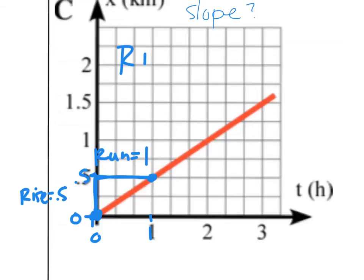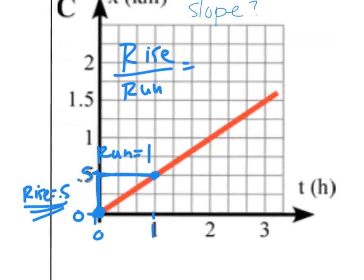All right, so if I go to calculate rise over run, rise divided by run just equals this number right here, this 0.5. So I'm going to take this 0.5 and I'm going to put it in here for rise. So that's 0.5. I'm going to divide it by my run, which I said is one. Okay, so my rise over run is just 0.5 divided by one.